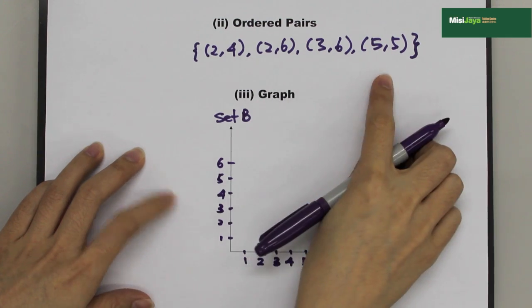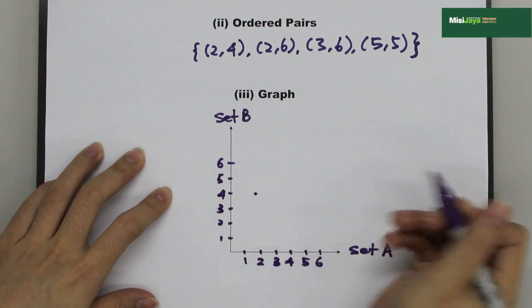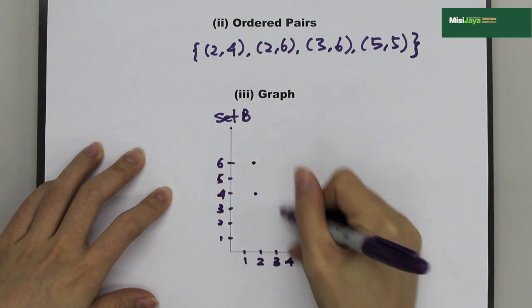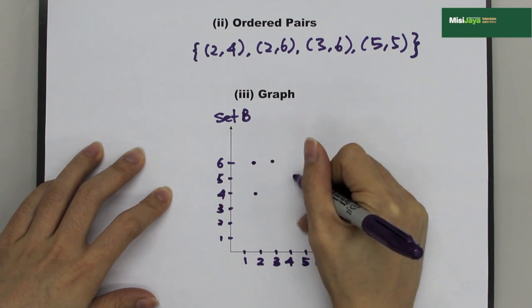We use back the same example as the above: (2,4), (2,6), (3,6), and (5,5).